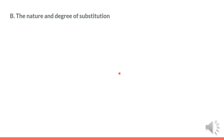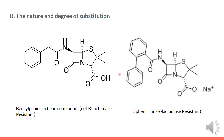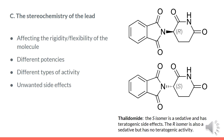Secondly, the nature and degree of substitution. Adding an aromatic ring to benzylpenicillin gives it the property to be beta-lactamase resistant. And finally, the stereochemistry of the lead. It is now well established that the shape of a molecule is normally one of the most important factors affecting drug activity.